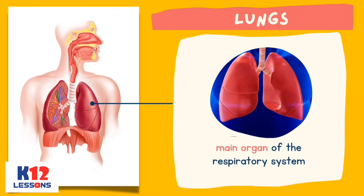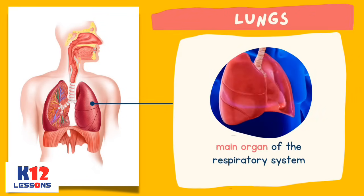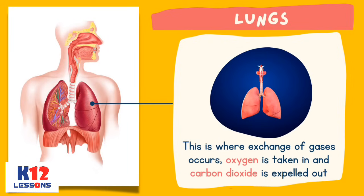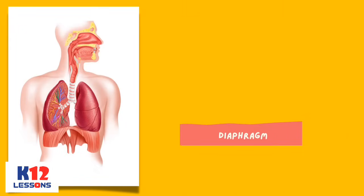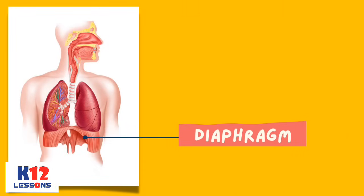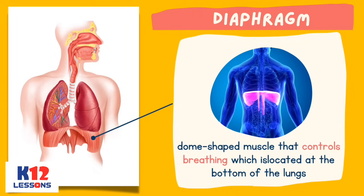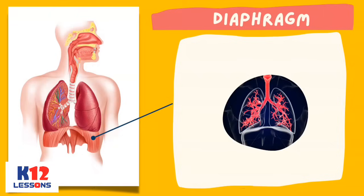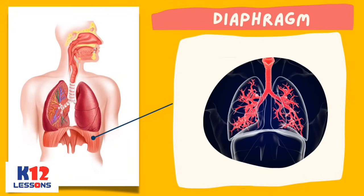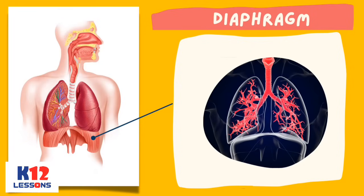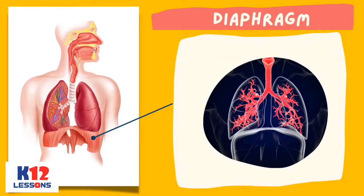Lungs are the main organ of the respiratory system. This is where the exchange of gases occurs — oxygen is taken in and carbon dioxide is expelled out. The diaphragm is a dome-shaped muscle that controls breathing, located at the bottom of the lungs. When we inhale, the diaphragm contracts and moves down, allowing air to move into the lungs. When we exhale, the diaphragm expands, reducing the space for the lungs and forces air out.